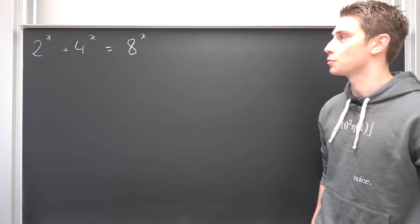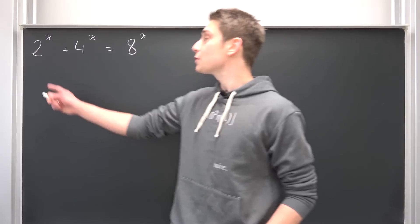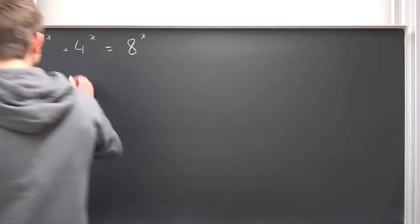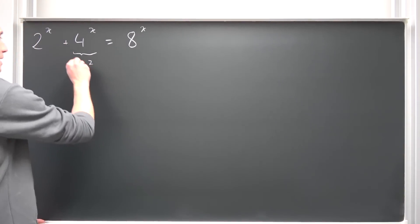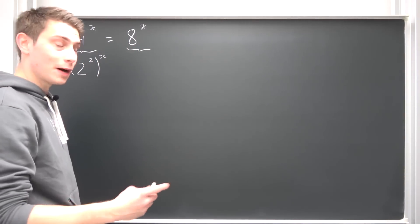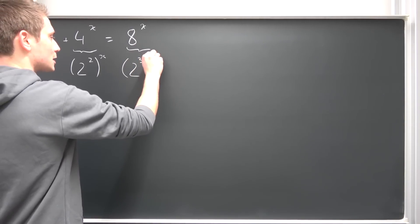How could we approach a problem like this? Well, maybe at first sight you can already see something. I mean we have 2 to the x here and 4 is kind of a 2, all right. So 4 is nothing other than 2 squared, but all of this to the x power. And 8 to the x, well, it's also a power of 2. It's the third power, 2 to the third power to the x power.